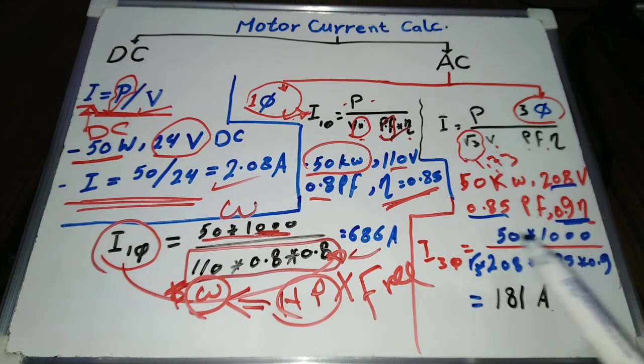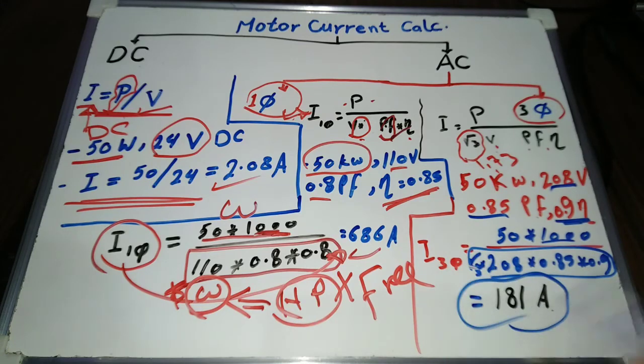Motor current equals 50,000 divided by 275.27, equals 181 amps. Note that three phase motors' power factor and efficiency are usually greater than single phase motors.